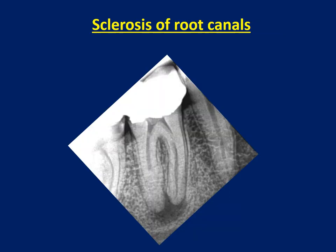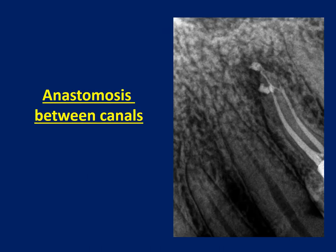For example, sclerosis of the root canal: the distal canal is fully sclerosed for half the length and the mesial canal is sclerosed in the coronal area, with a very large lesion present. Anastomosis between canals — you can see that there is an anastomosis between the buccal and the palatal canal in the apical region where they join and form one canal.